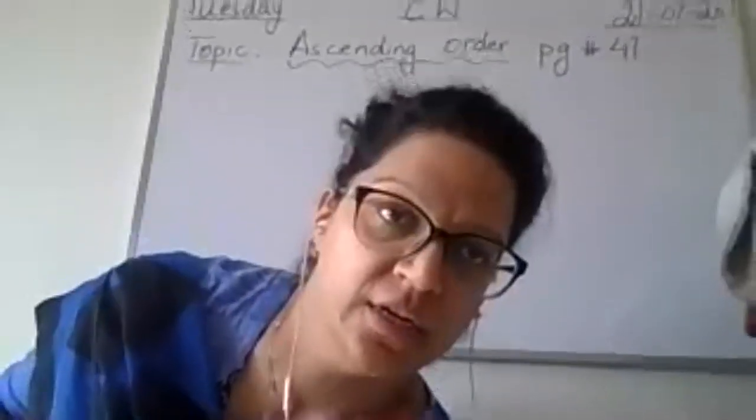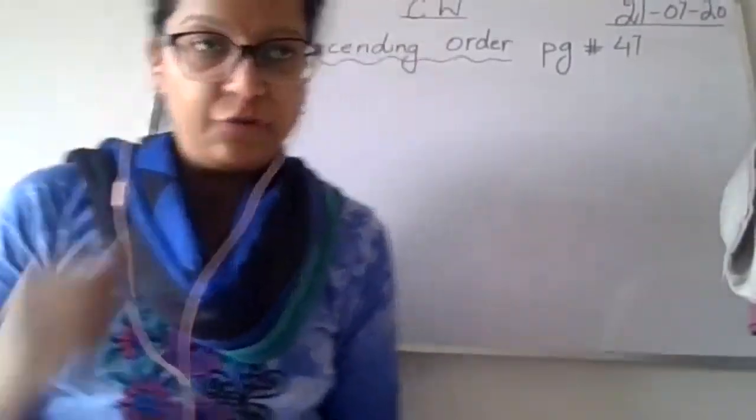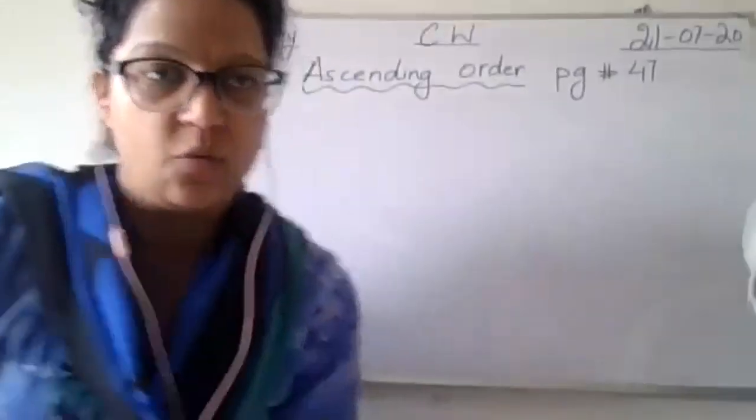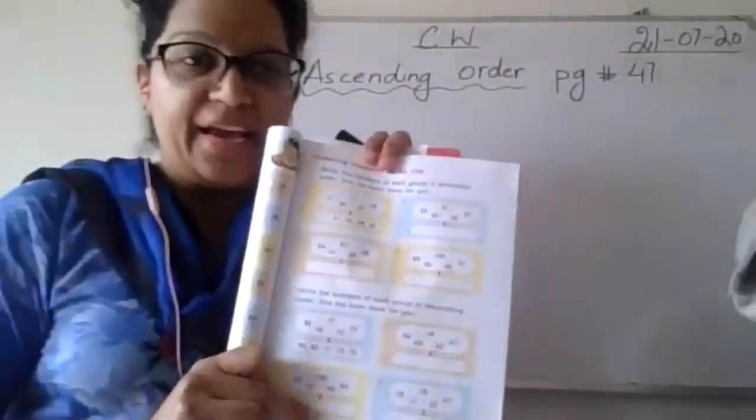Yesterday we studied about ascending order. Today we are going to do more exercises on ascending order, in the copies and in the books as well. Take out your countdown books on page number 47. Hurry up class, get ready so that we can start our work.